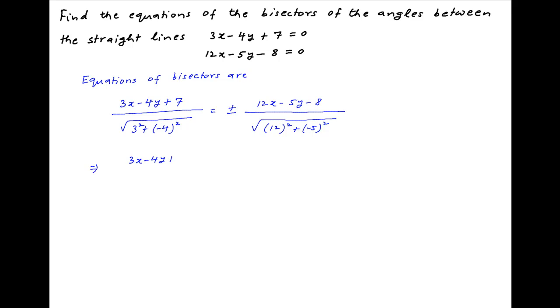This implies that 3x minus 4y plus 7 divided by 5 equals plus or minus 12x minus 5y minus 8 divided by 13.